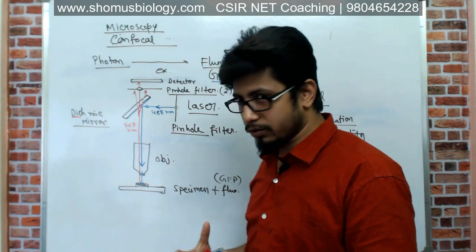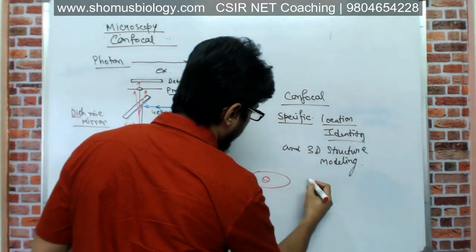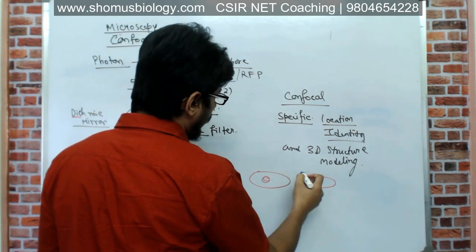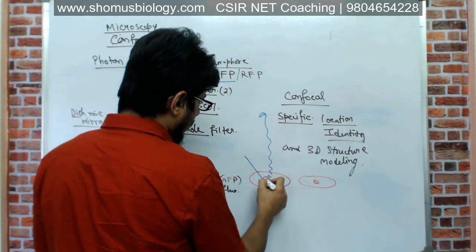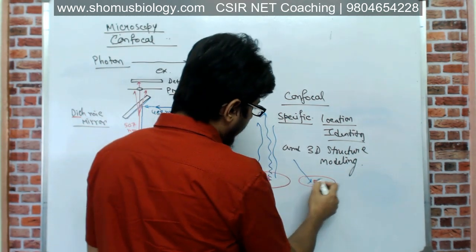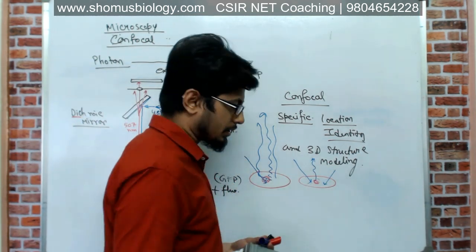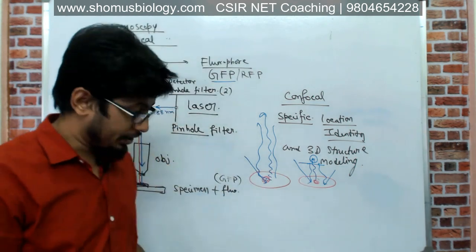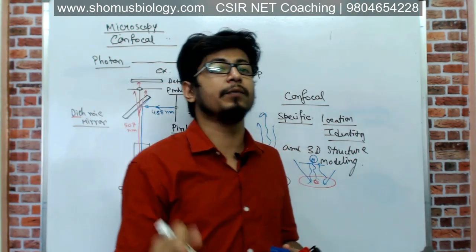In conventional wide field microscopy, light hits the cell and emission comes from different sides, all received by the detector. But in confocal microscopy, if we want to visualize only the nucleus, the other emissions from different parts of the cell are cut out and only the emission from the nucleus is received. The nucleus may be at the top or bottom of the cell at different depths — we can achieve that precise targeting with laser.